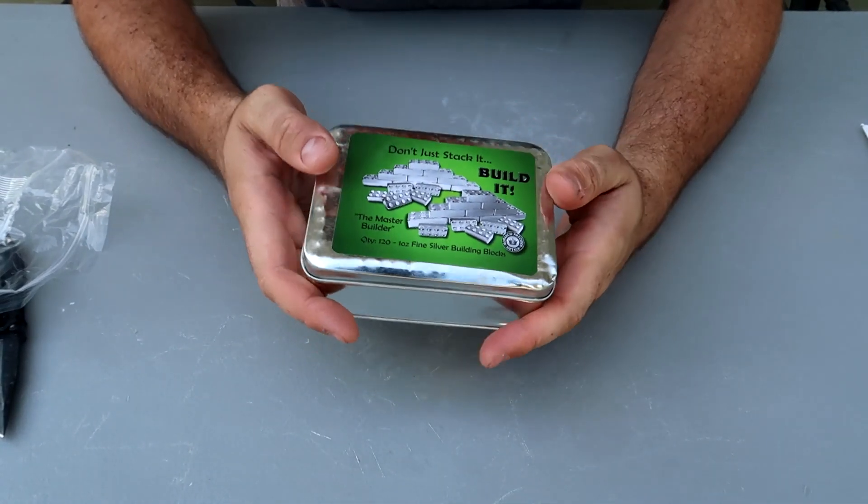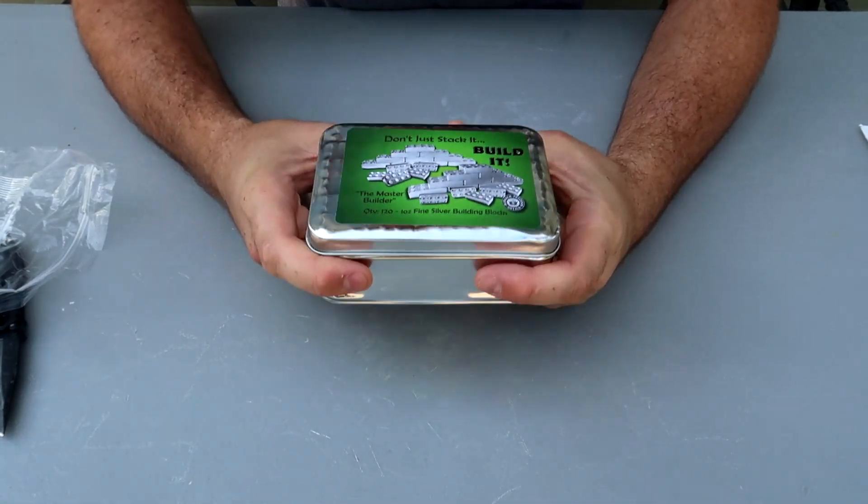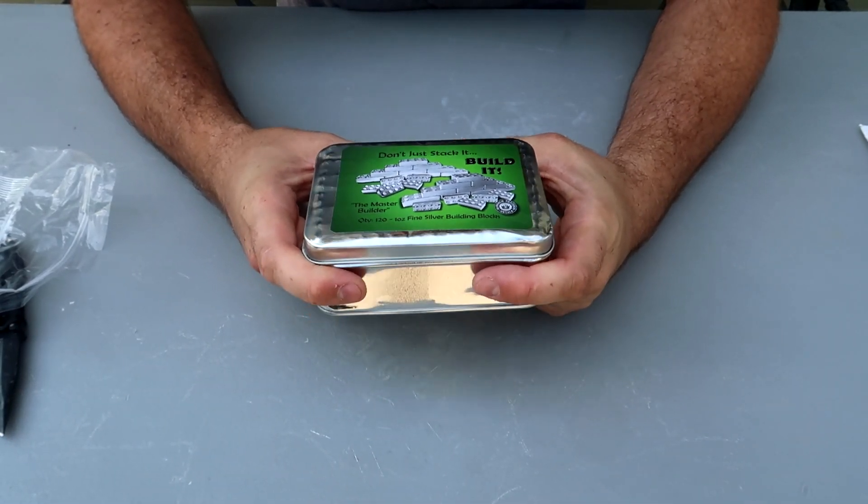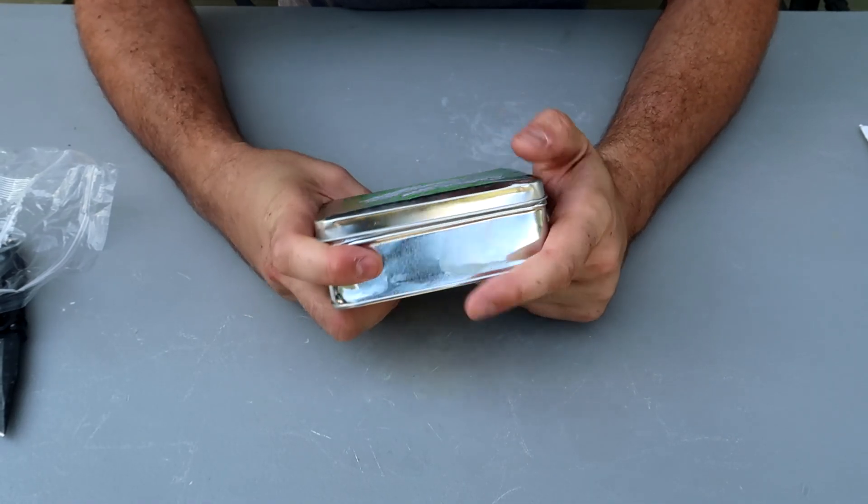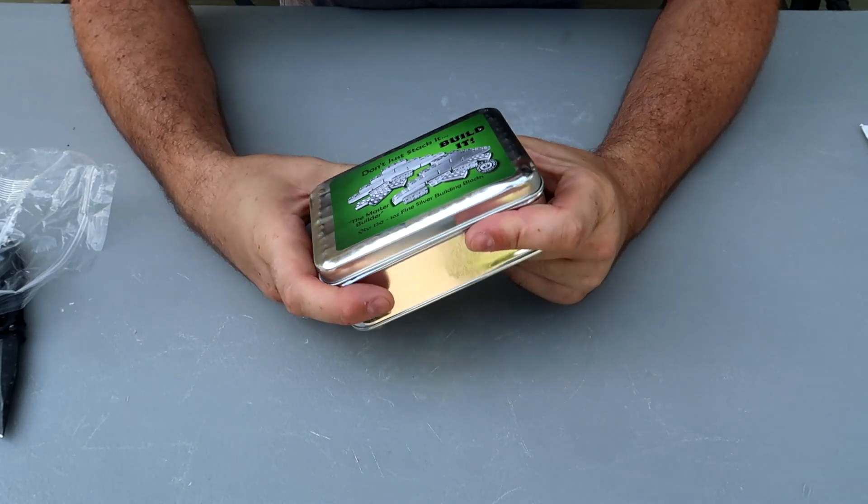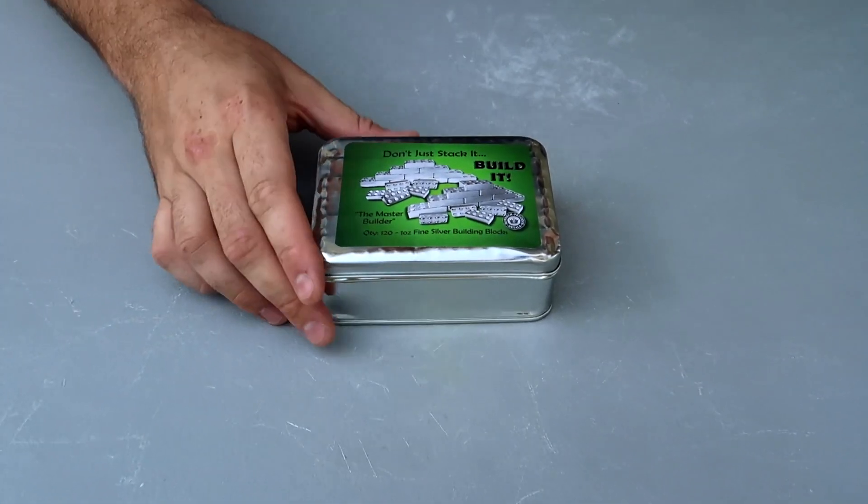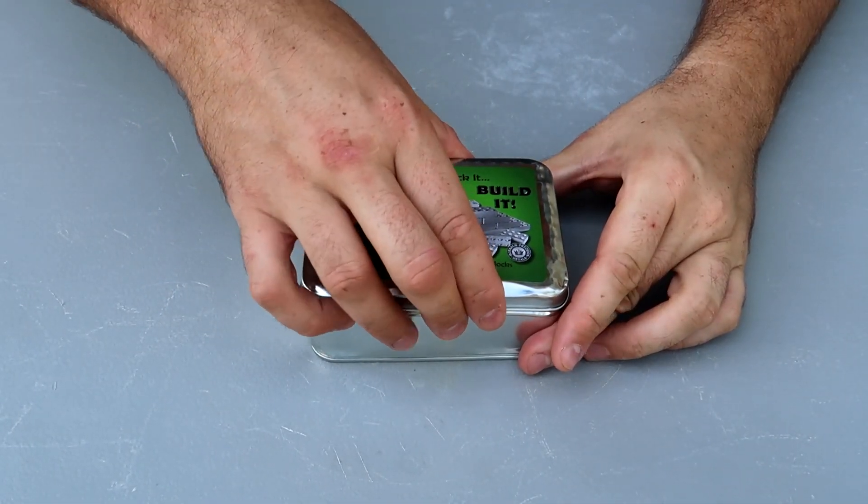So you got it here, building blocks. Wow, that package got bit up pretty good. I wish that didn't happen, but it's just so heavy in the shipping, it's gonna shake around. 120 ounces, even though it wasn't a box, with the other silver it still got bit up quite a bit. They probably already had it this way since they buy back silver all the time.